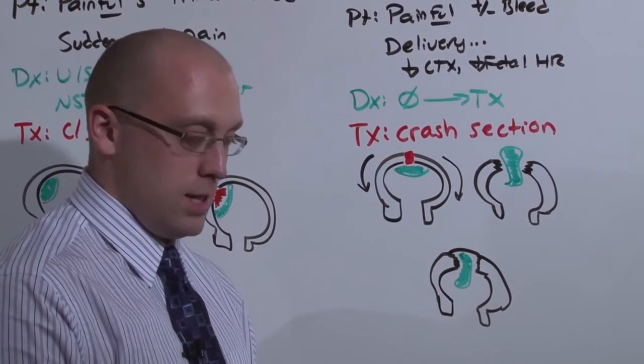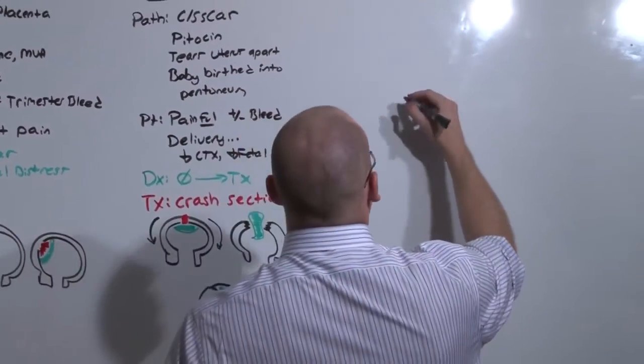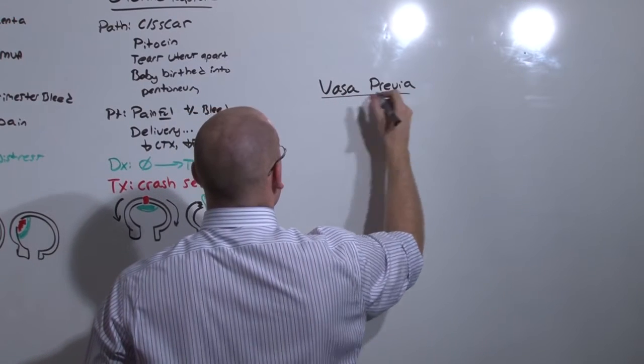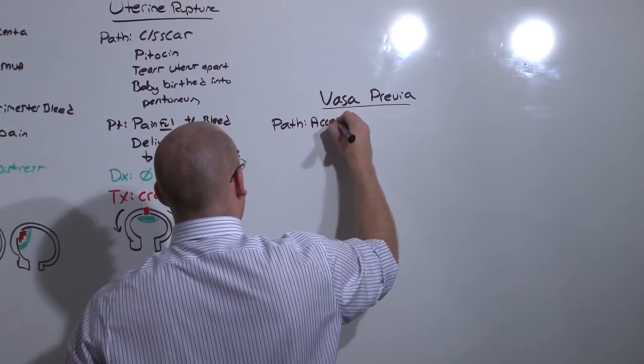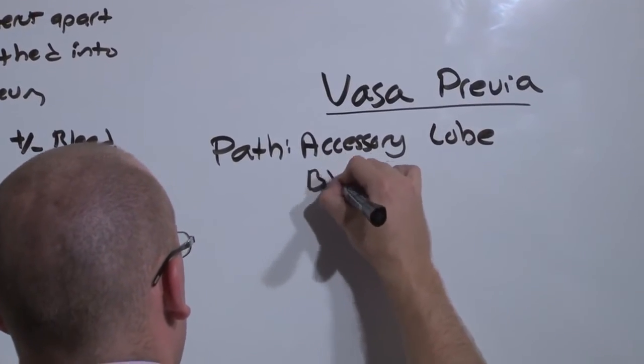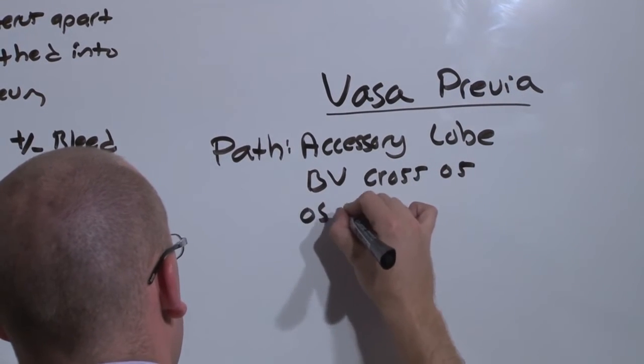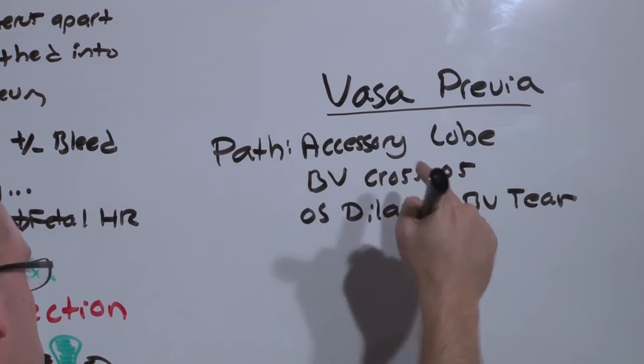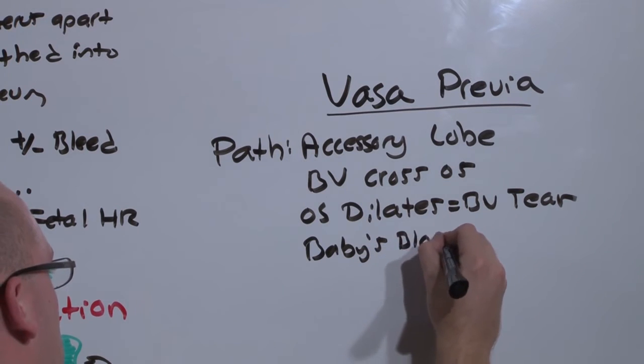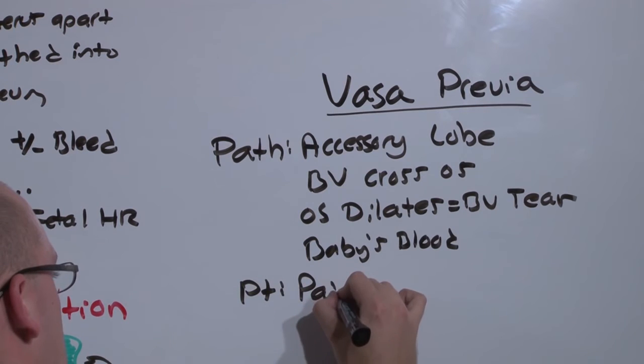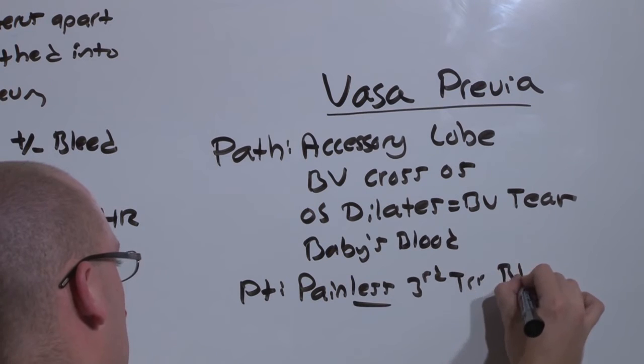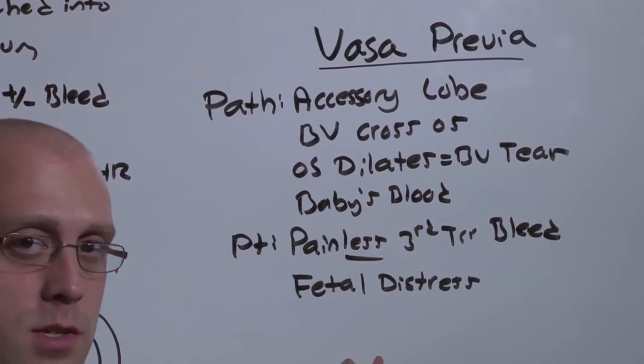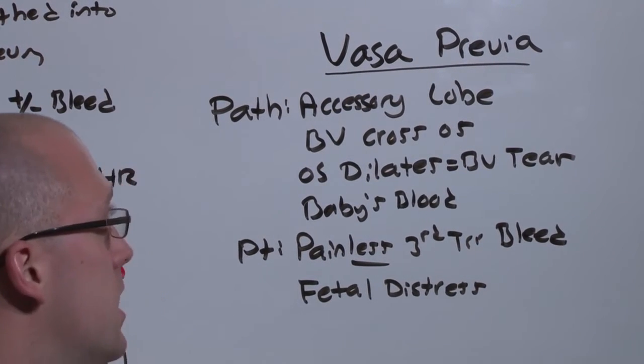And if we transition back to guaranteed bleed in the third trimester, let's go over a rare disease called vasa previa. You see previa again. So you're going to suspect that something is going to cross the os. In this case, it is an accessory lobe that implants across the os. And the blood vessels cross. And so as the os dilates, blood vessels tear. Blood vessels of the placenta are baby's blood. So not surprisingly, this is going to present with a painless bleed and fetal distress. This is essentially the same pathogenesis as placenta previa. Only instead of the placenta tearing itself, it's actually just the vasculature.